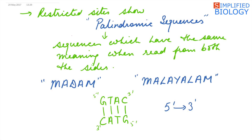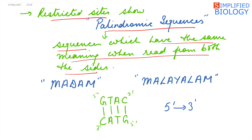The restriction sites on which they act show palindromic sequences. Palindromic sequences mean sequences that have the same meaning when read from both directions — just like the word 'madam' or 'malayalam', which read the same both ways. Restriction endonucleases always read the restriction site in the 5' to 3' direction.